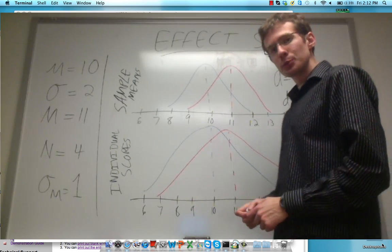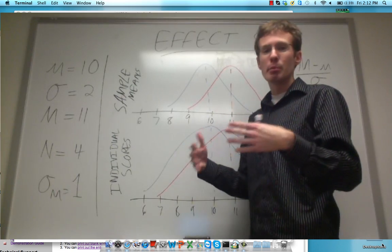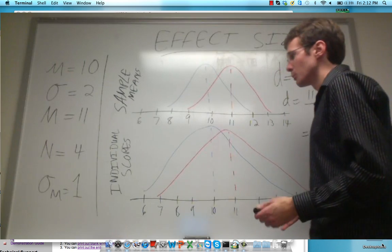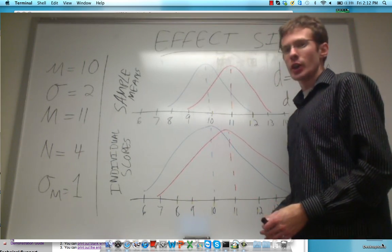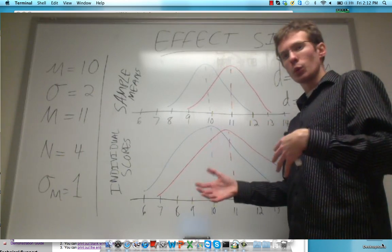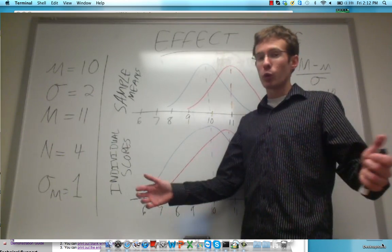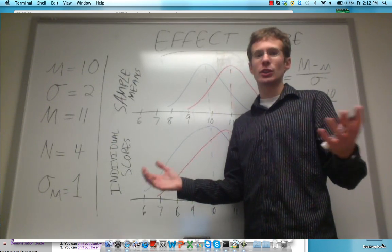Effect sizes should always be interpreted in the context of your experiment and what you would think would be practically significant or useful. However, there are some guidelines and some conventions for interpreting effect sizes. Generally, anything around 0.2, 0.1, 0.3 is regarded as small. Anything from about 0.4 to 0.6 is medium and about 0.7 to 1 is large.